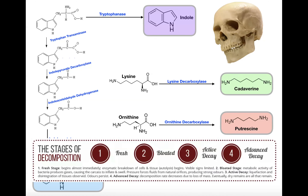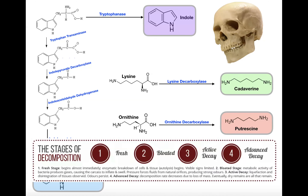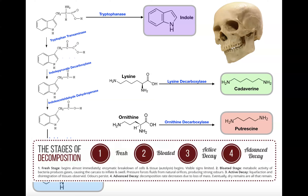Then you have active decay, where you have liquefaction of all the organs and tissues, and the body begins to look unrecognizable. The zombies from The Walking Dead are probably somewhere in the bloated and active decay phases of decomposition. Finally, pretty much all of the decayable tissues are gone, leaving only bones — the dry remains — and that's advanced decay. At advanced decay, the rate of decomposition decreases because there are really no organs left to liquefy. This process is mainly driven by bacteria.